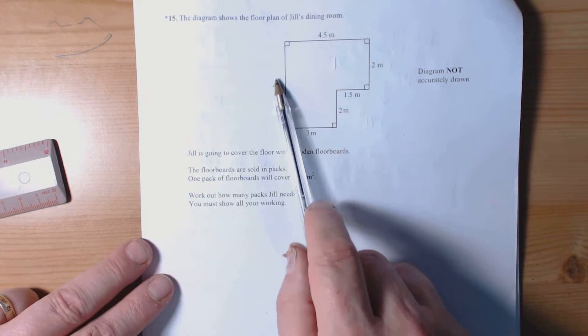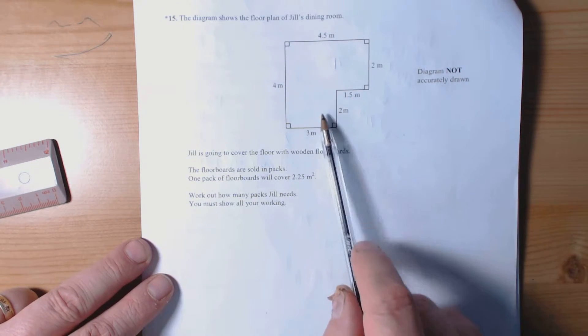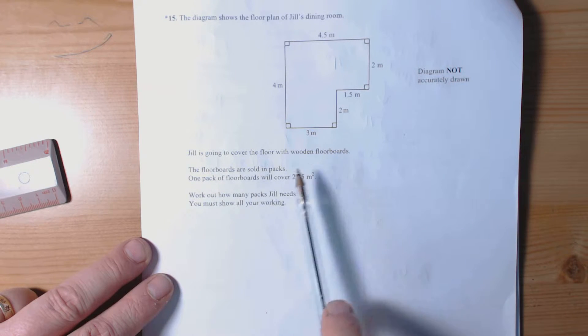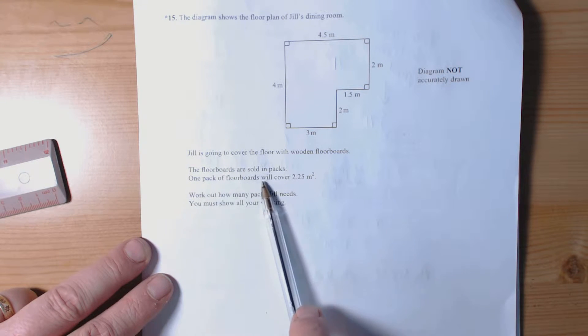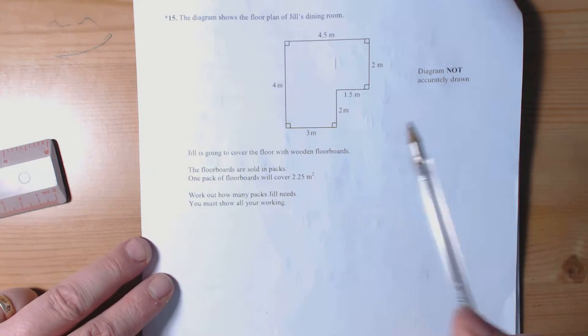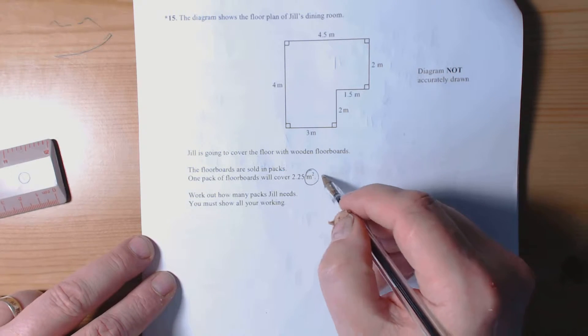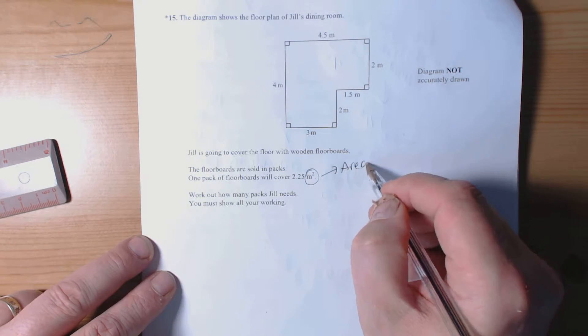So we have a question here about a dining room and we're going to cover it with floorboards sold in packs. One pack covers 2.25 square meters, so as soon as we see square meters then we seem to be thinking that the context is area.